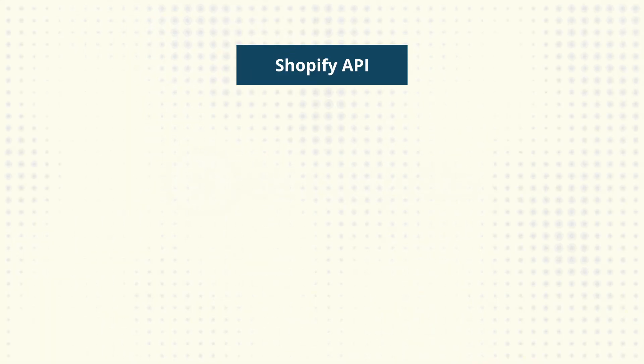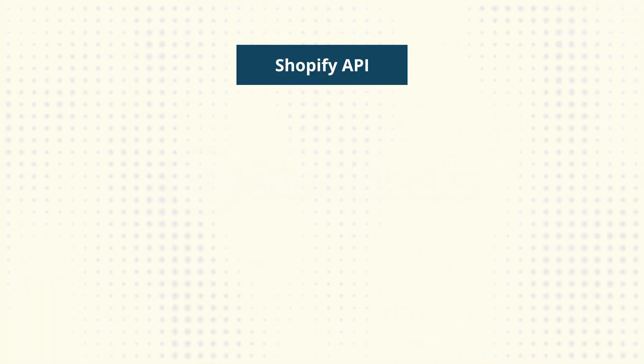GraphQL is better than REST for known reasons. One of those reasons is that GraphQL prevents overfetching or underfetching, which means for each request you get the exact data that you're looking for. In REST, most requests do overfetch or underfetch. Let's use the Shopify API as an example.